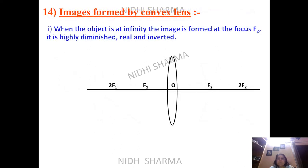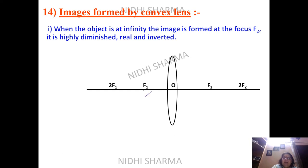Using all three rules, we can determine image formation. For a convex lens, there are six cases. Label the diagram with F1, F2 on both sides. The first case is when the object is at infinity.